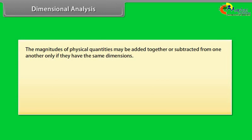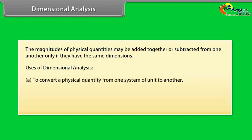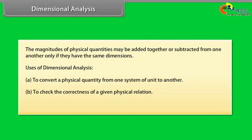Dimensional analysis. The magnitudes of physical quantities may be added together or subtracted from one another only if they have the same dimensions. Uses of dimensional analysis: A) to convert a physical quantity from one system of unit to another, B) to check the correctness of a given physical relation, C) to establish a relation among the given physical quantities.